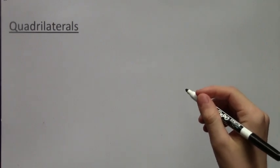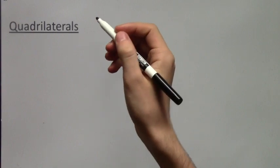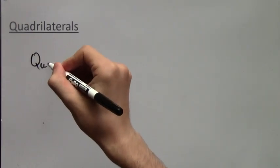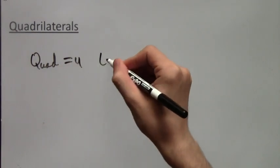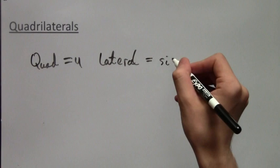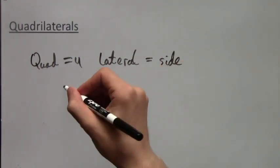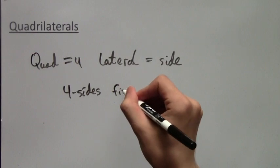In this video lesson, we will learn about quadrilaterals. So first, what is a quadrilateral? Well, quad means four and lateral means like side. So quadrilateral is something with four sides.